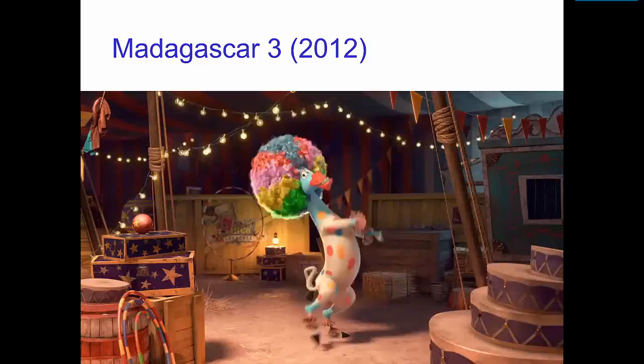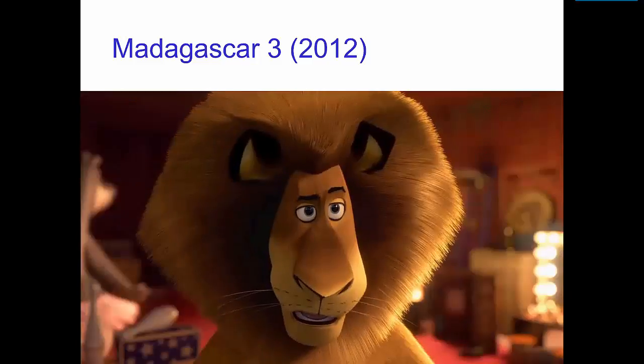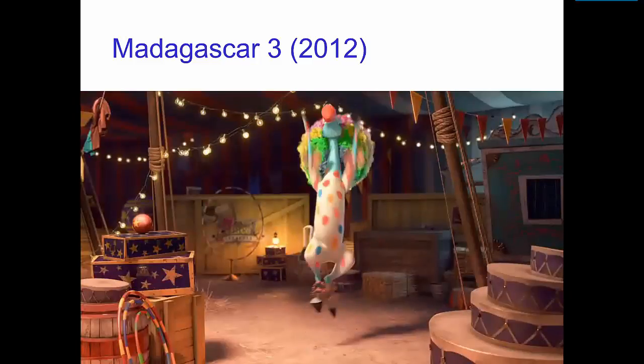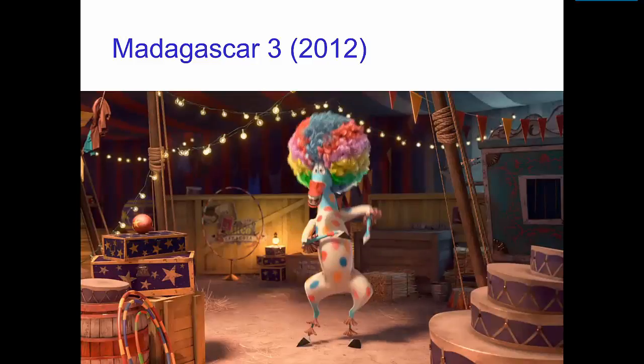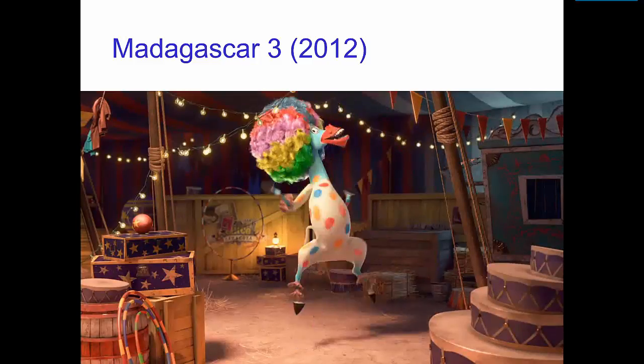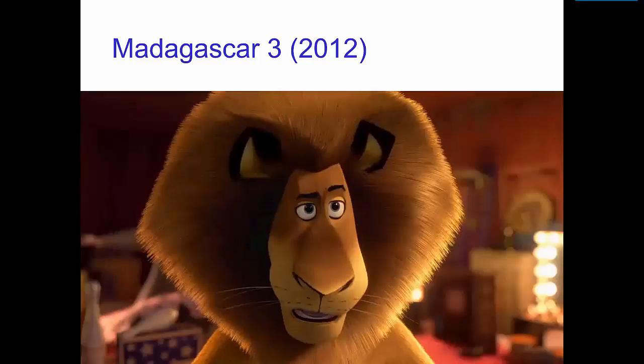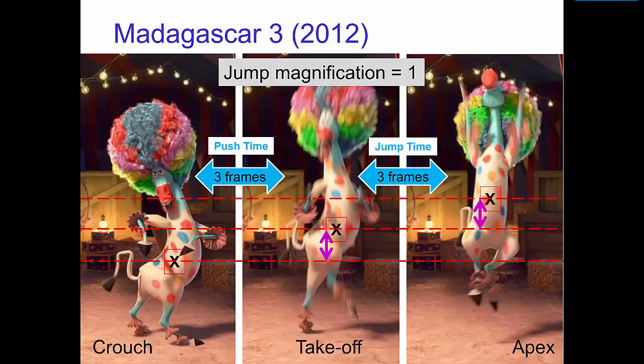Here's an example of a simple jump. In this example, the jump magnification equals 1 since the push height, crouch to takeoff, equals the jump height, takeoff to apex.